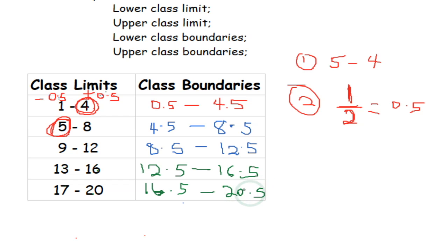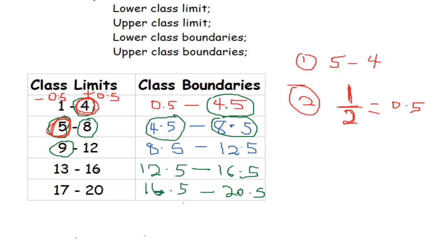And 20 plus 0.5 is 20.5. Once you do this you will have successfully transformed your class limits into class boundaries. Unlike class limits where the upper class limit of the first interval is not the same as the lower class limit of the next, for class boundaries they are now equal — 4.5 equals 4.5, 8.5 equals 8.5, and so on. The upper class boundary of one interval equals the lower class boundary of the next.